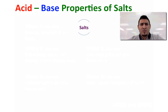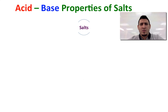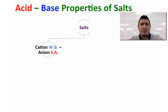Now, salts are ionic compounds and they are made from cations and anions — one salt is made from one cation and one anion. Now we have four different types of salts. If the salt is made from the cation of a weak base and the anion from a strong acid, the salt will have an acidic property.